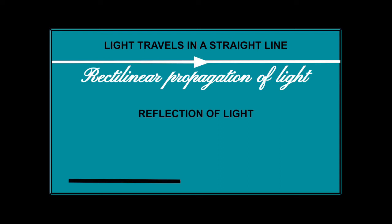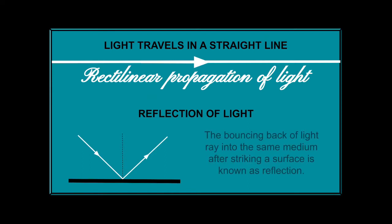Let's have a recap of what reflection is. Consider this black bar as a smooth polished surface. If a ray of light falls at an angle on that surface, that ray of light will be reflected back into the same medium — it will bounce back into the same medium. This phenomenon is known as reflection of light.